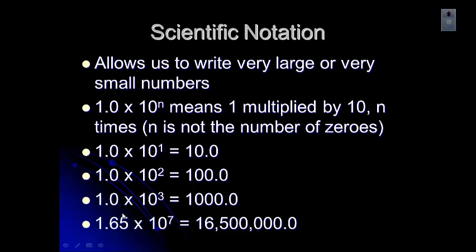And then if we change that number at the beginning, and it can be really any number, 1.65 times 10 to the 7th, what we've done is we've moved that decimal to the right seven places. So you can see 1, 2, 3, 4, 5, 6, 7. So that gives us 16,500,000.0.